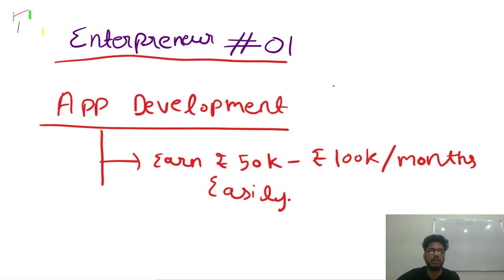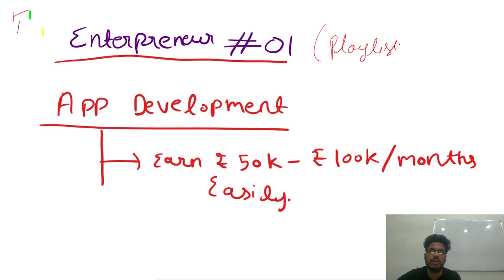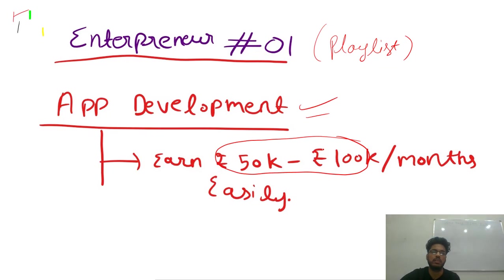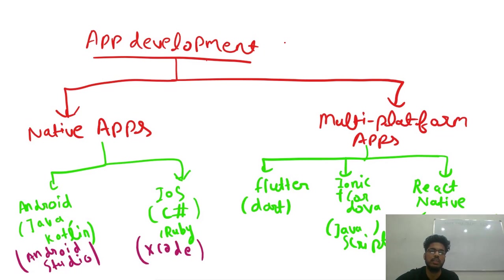Hi guys, myself Subham Sharma and today we would be dealing about an entrepreneurship playlist. Today we will be starting with app development. If you follow the path provided by me, then I guarantee that you can easily earn from 50k to 1 lakh, that is 100k per month easily. Just follow what I am saying and have faith.